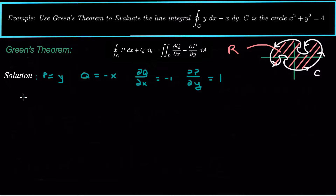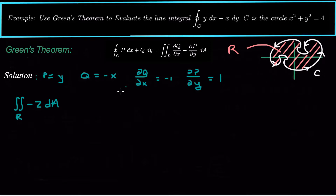So partial Q partial x minus partial P partial y gives us negative 2 dA. We want to integrate over some region R. The region is not the crazy shape — the circle of radius 2 centered at the origin is where we want to integrate.